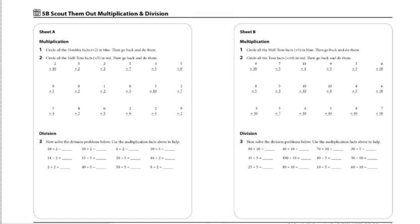To begin, the student will choose one of the Scout Them Out sheets. I'm going to choose sheet A. I will circle the first set of facts in blue and use a regular pencil to record the answers.